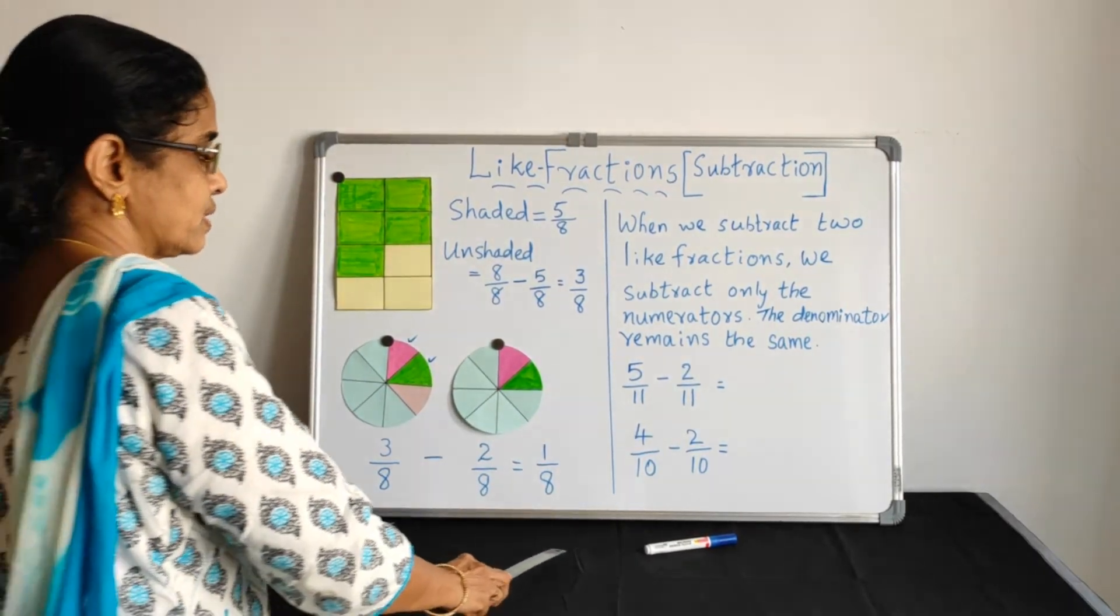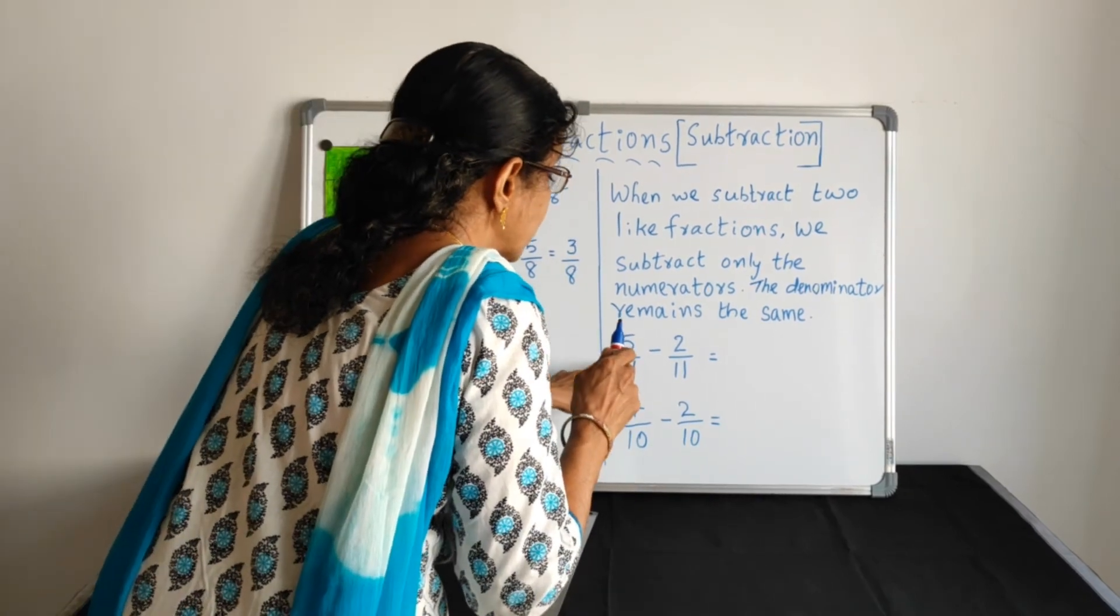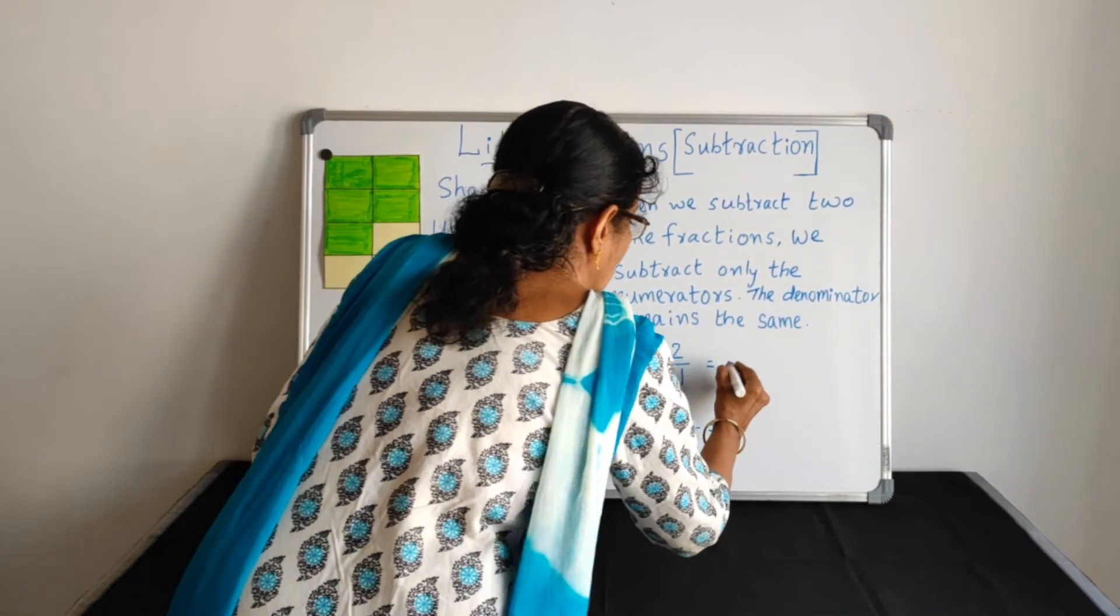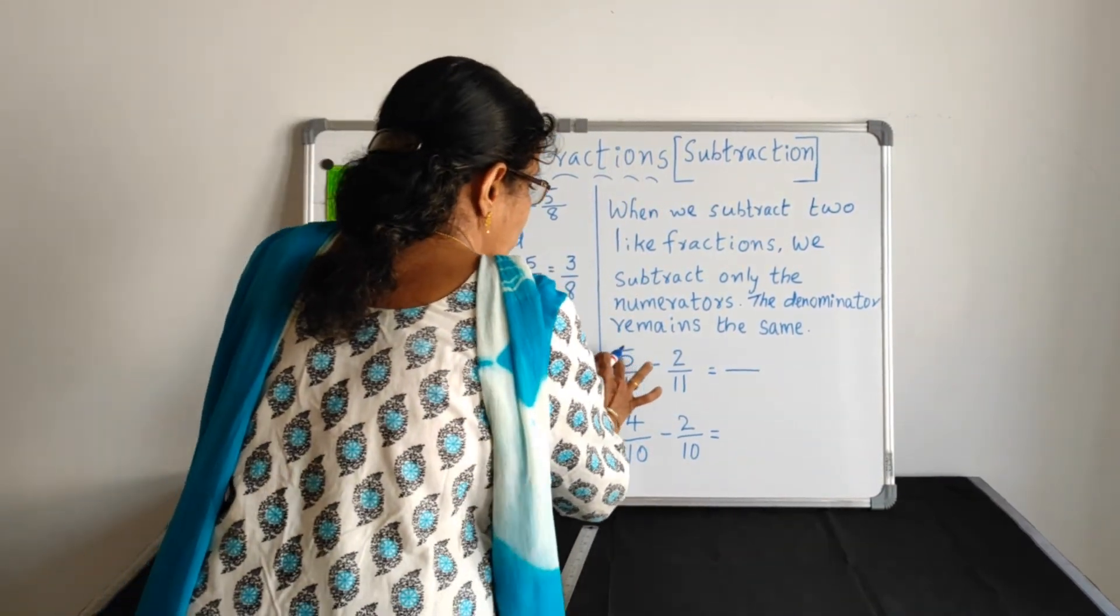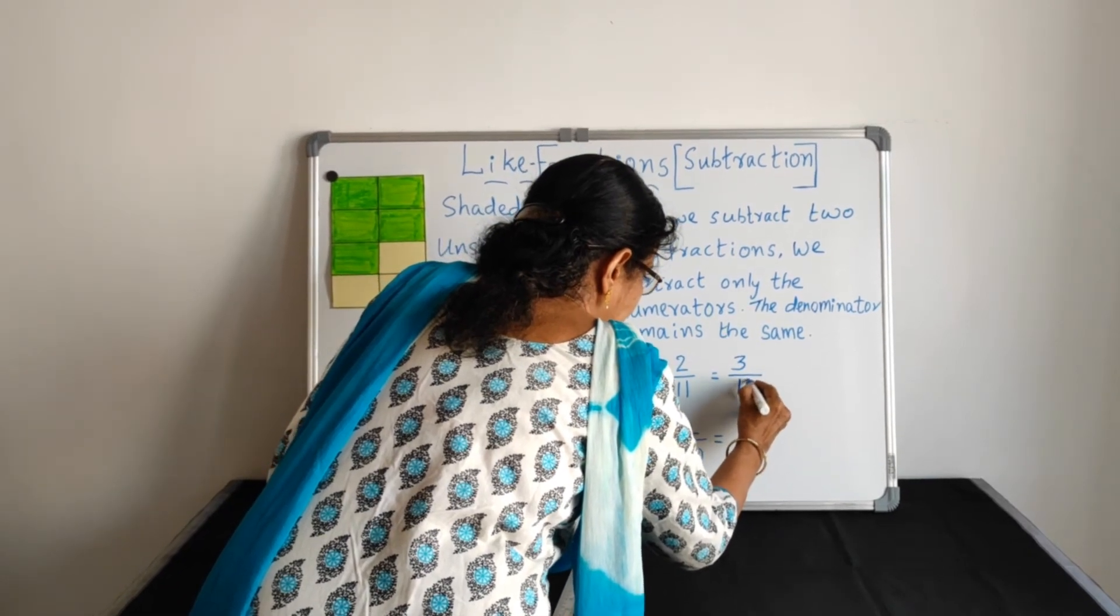Are you ready? Give me the answers. 5 by 11 minus 2 by 11. Denominator there is no change. Only the numerator. What is 5 minus 2? 3 by 11. Done.